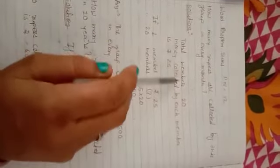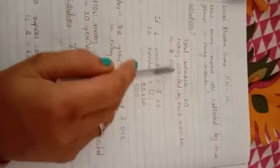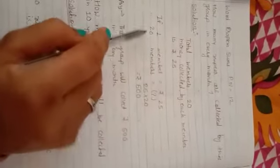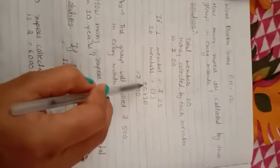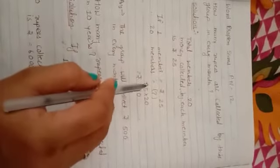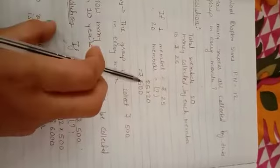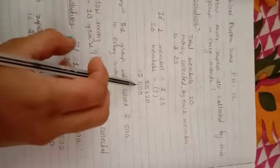Total members is 20. Money collected by each member is 25 rupees. If one member is 25 rupees, therefore 20 members is how many? We do here cross multiplication. We have to find the value. We do multiplication: 25 multiplied by 20. 500 rupees. The group will collect rupees 500 every month.